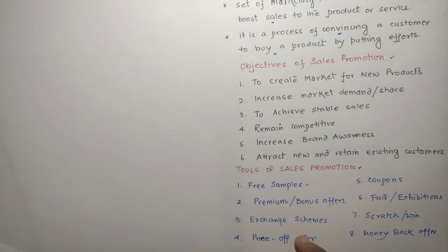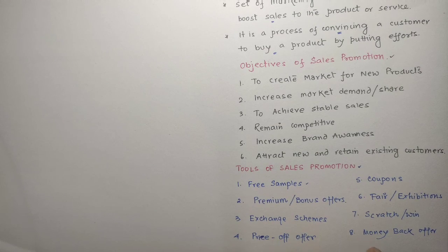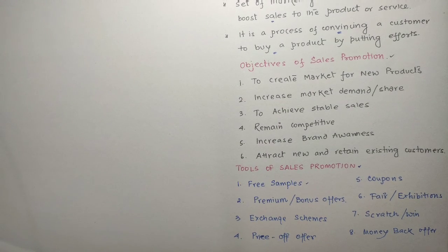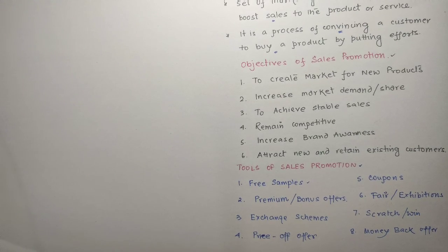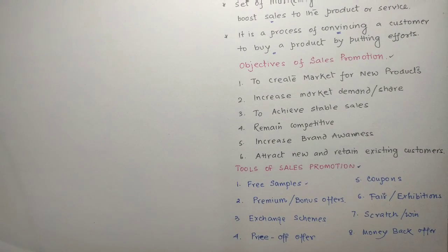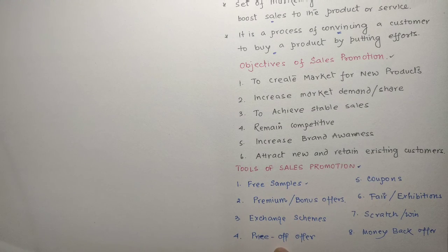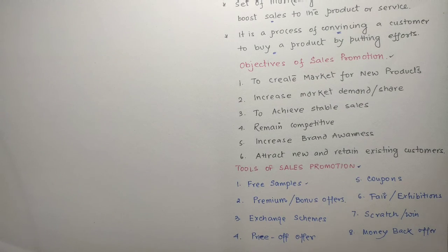The second tool is premium or bonus offer — for example, if you buy 500 grams of toothpaste you get 30% extra. Exchange offer means you give something and get something new in return — especially in the case of cars, where you give your old car and get a new one. Price offer means products are sold at a lower price than the original price, and these schemes are designed season-wise — for example, purchasing an air cooler with a discount.